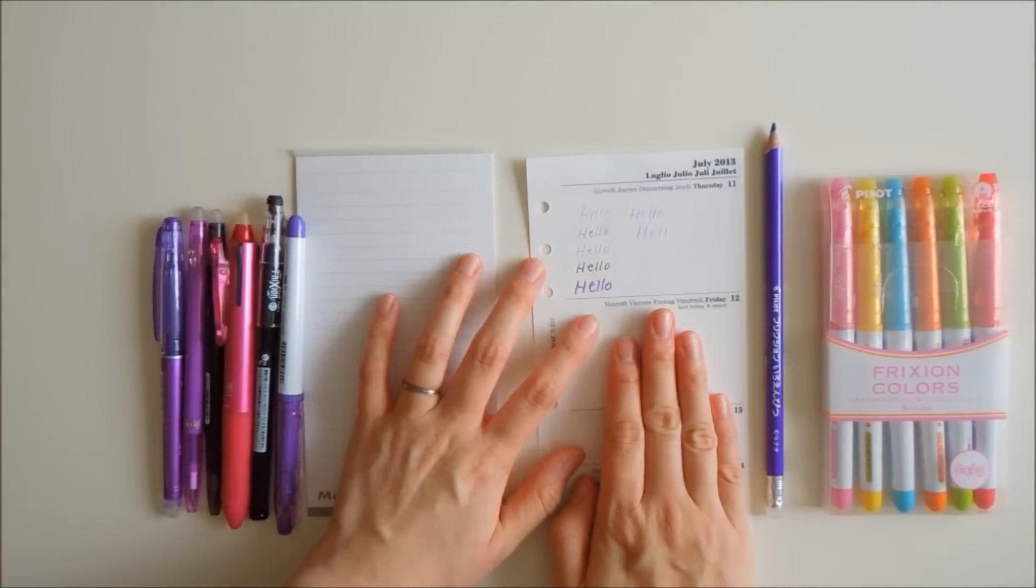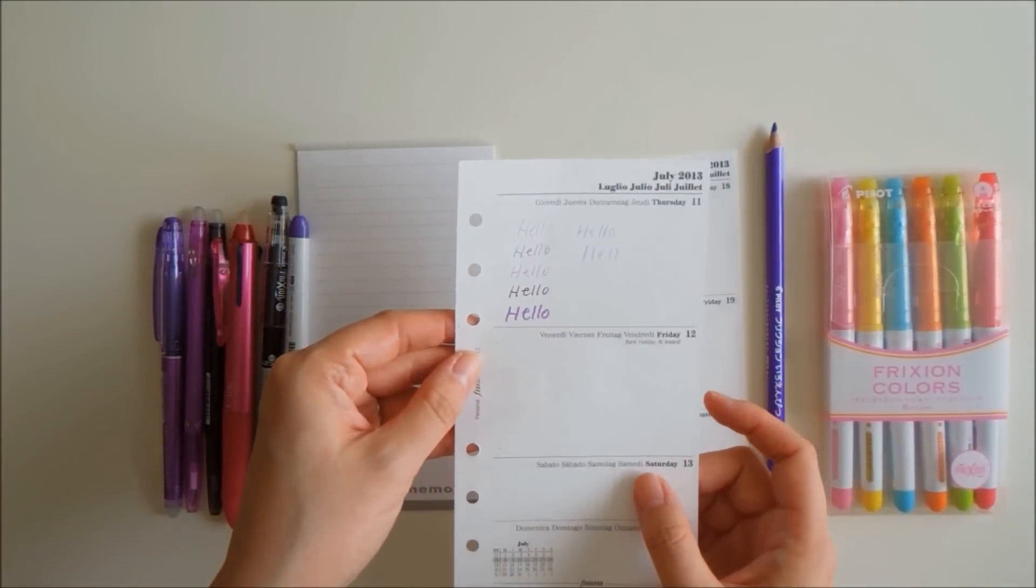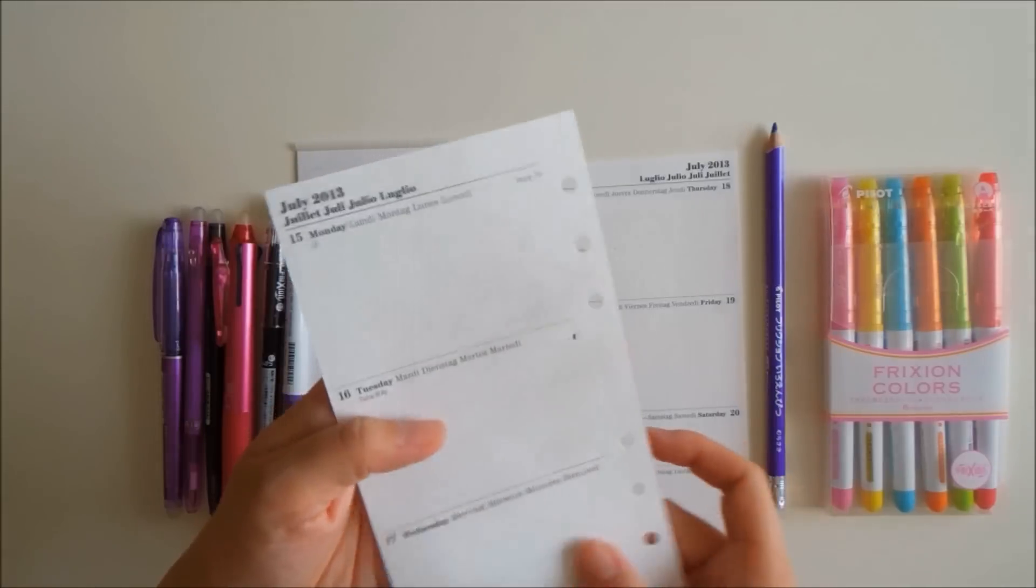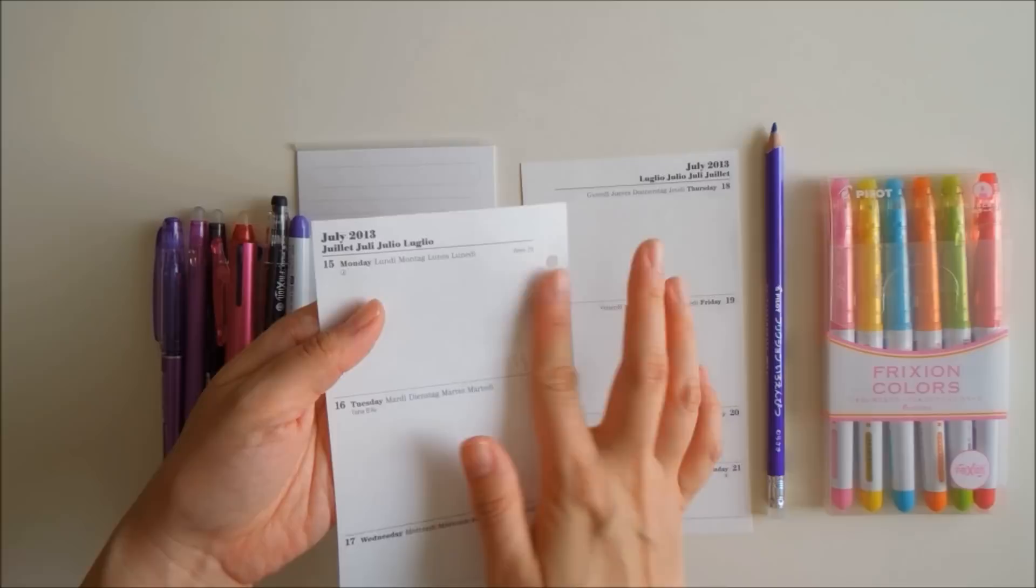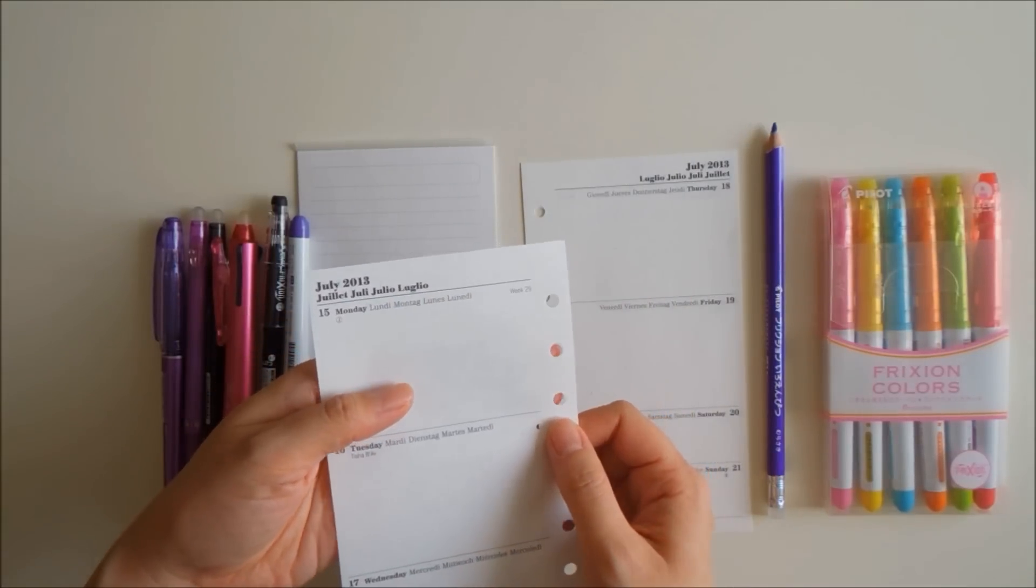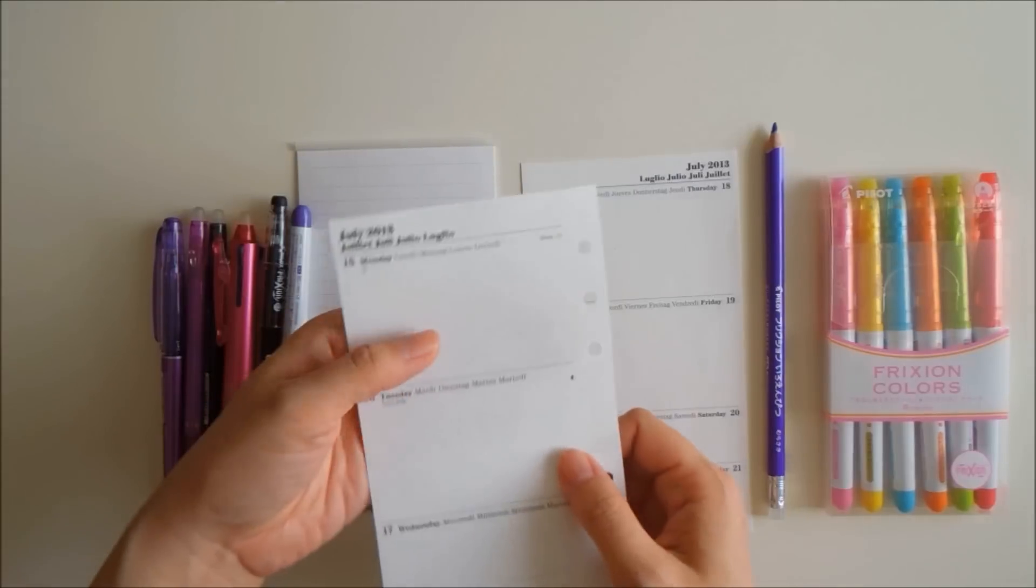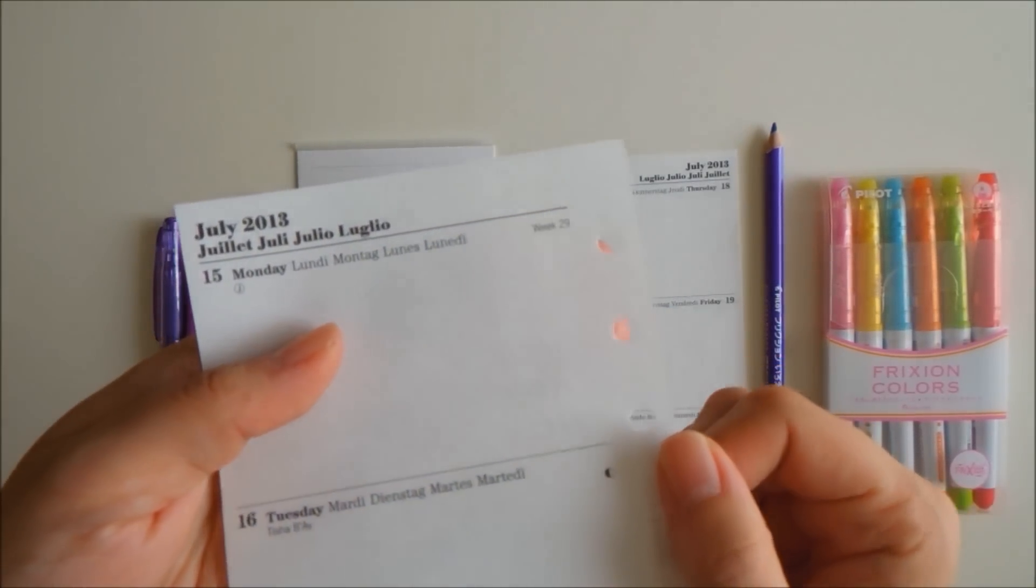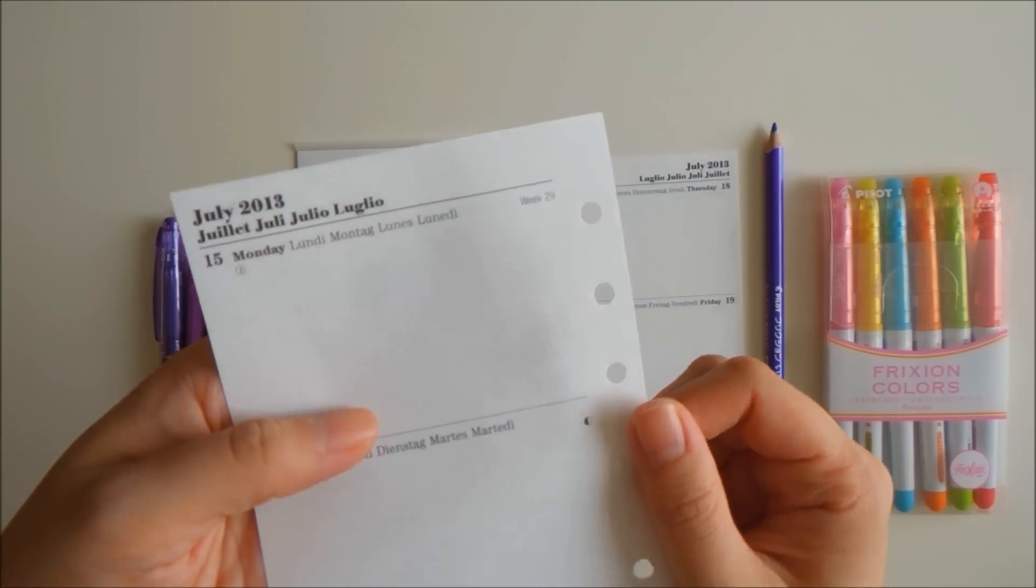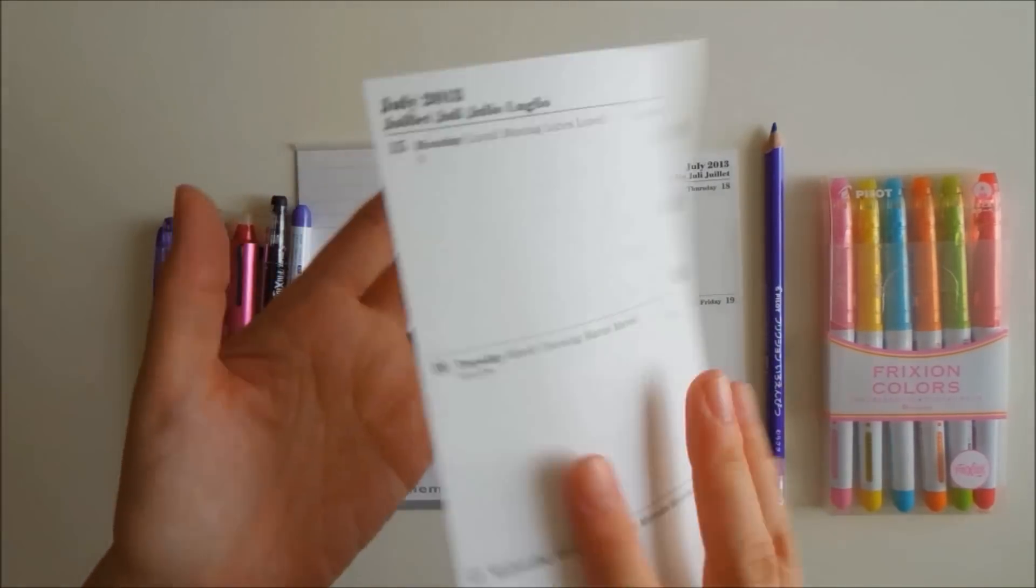So this is just on the regular Filofax pages, and there is going to be a bit of shadowing, there's no bleed through, but there will be a bit of shadowing, especially with the darker colored markers, but it's not too bad. Perhaps maybe if I use like a black ink, it would show more, but it's not too bad.